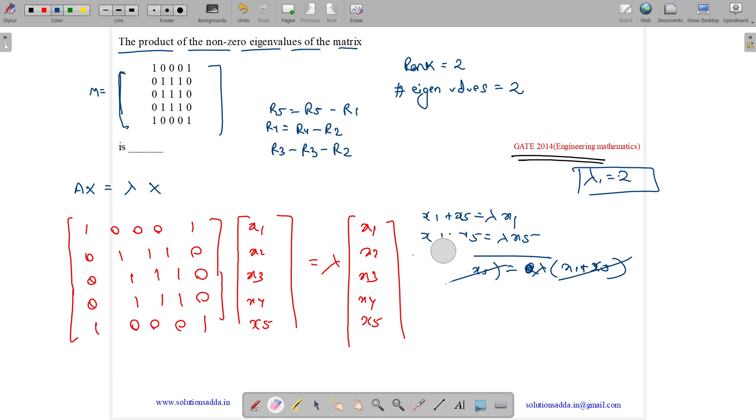Now another equation that you can form is multiplying second, third and fourth row respectively. You will get X2 plus X3 plus X4 equals to lambda X2. Then X2 plus X3, multiplying third row, you will get lambda X3. Multiplying fourth row, you will get X2 plus X3 plus X4 equals to lambda X4.